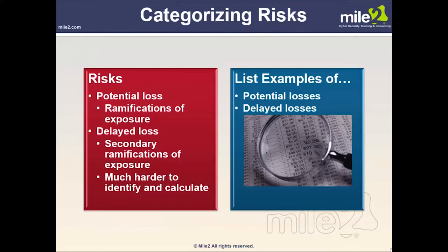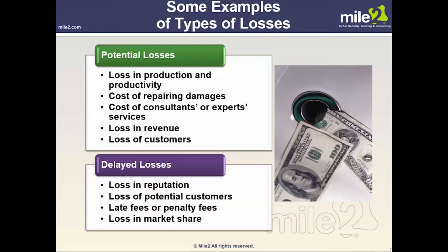When categorizing risks, risk is the potential loss — the ramifications of exposure. There is also delayed loss, which is the secondary ramification of exposure and much harder to identify and calculate. Examples of potential losses include loss in production and productivity, cost of consultants or expert services, loss in revenue, and loss of customers. Delayed losses include loss in reputation, loss of potential customers, late fees or penalty fees, and loss in market share.